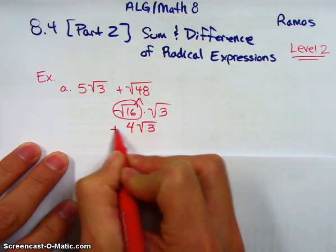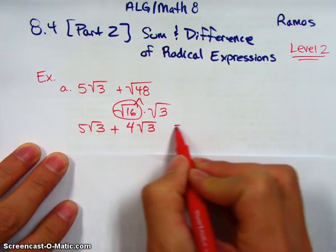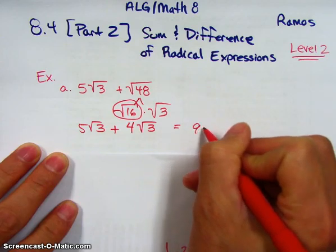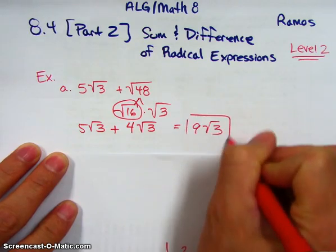And now all of a sudden, I have 5 radical 3 plus 4 radical 3. If you remember from your other video, you've got now 9 radical 3. Piece of cake, no problem.